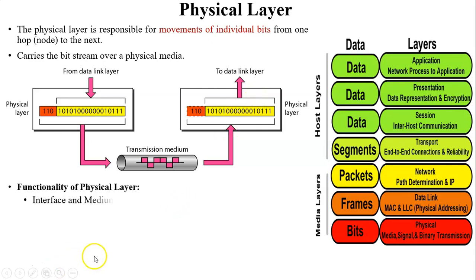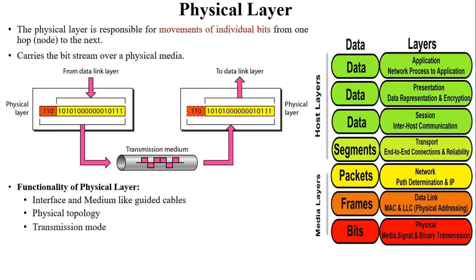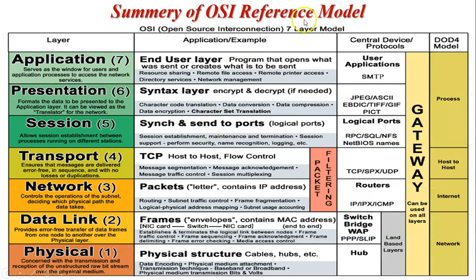The functionalities of the physical layer include: interface and medium — both sender and receiver are connected to intermediate devices through cables; physical topology — which topology is used in the network, such as bus or ring topology; and transmission modes — simplex, full duplex, and half duplex. The transmission mode is decided by the session layer. This is the summary of the OSI reference model, showing all layers along with their corresponding devices, protocols, and examples.